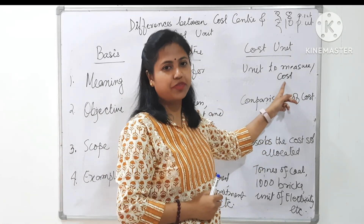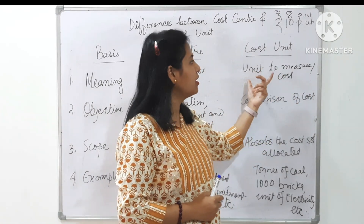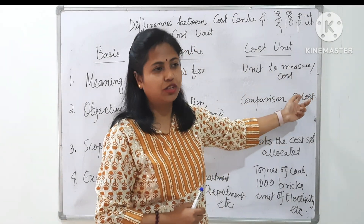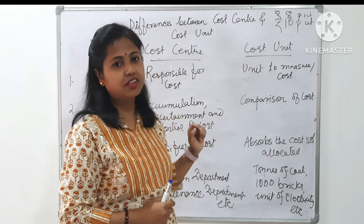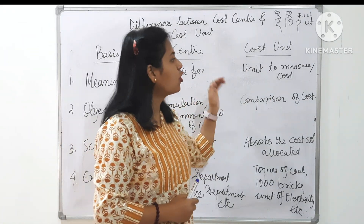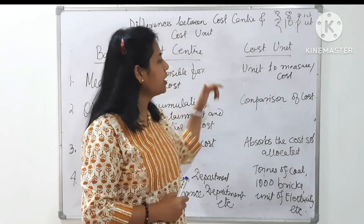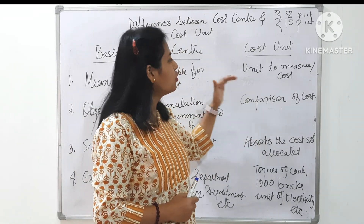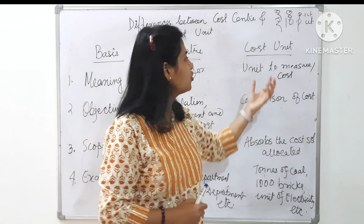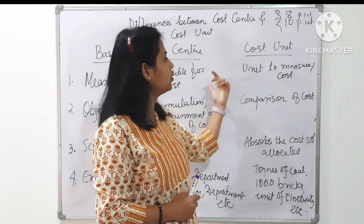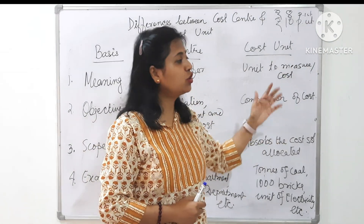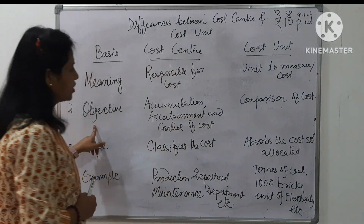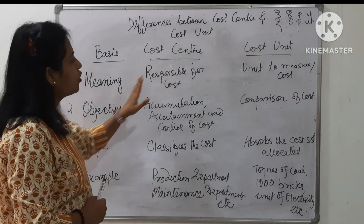So the cost unit is the unit used to measure the cost. I want to measure the cost in terms of some units. For example, I may measure it in terms of cost per unit of electricity consumption, or cost per kilometer, or cost per hour, or cost per unit. It is the unit in which I want to express this cost so that I can recover or absorb it.